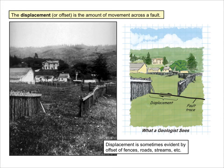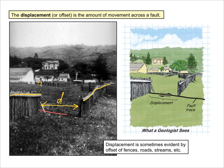Displacement or offset is the amount of movement that occurs across a fault. Displacement is sometimes evident by offsets of fences, roads, streams, etc. This is particularly true in strike-slip faults like what is shown here. In the left-hand picture you see a fence line that abruptly ends — you have to jump over to the right to pick it up again. That distance D along the fault is the displacement. What we don't know is whether that displacement occurred in one earthquake or multiple events, which makes a big difference in event magnitude.